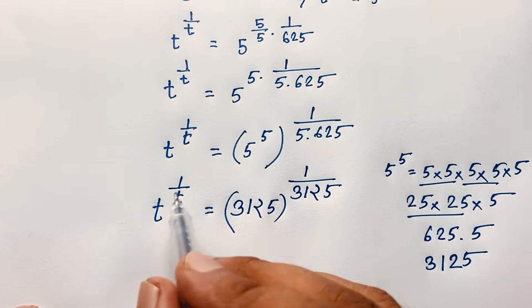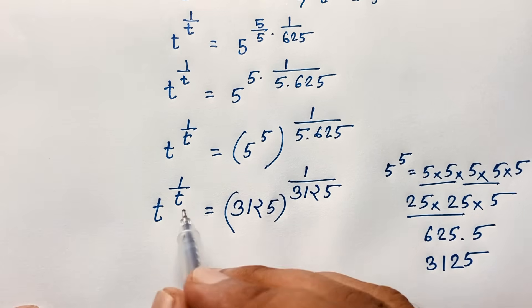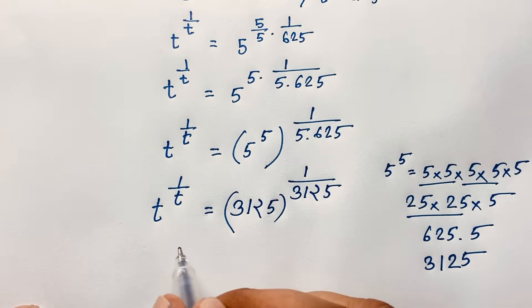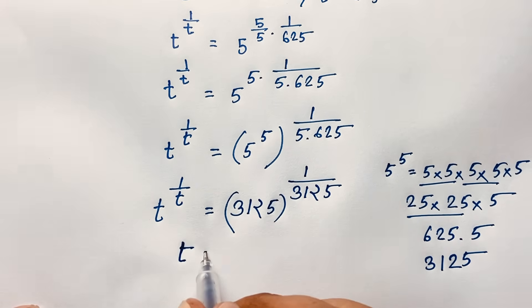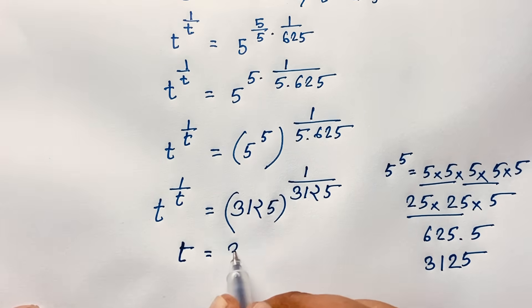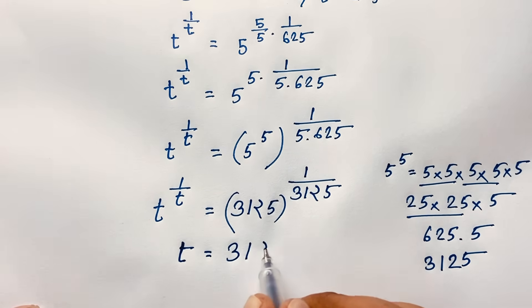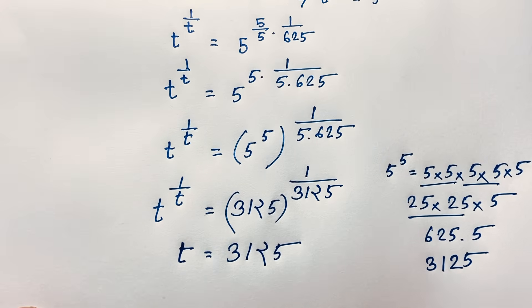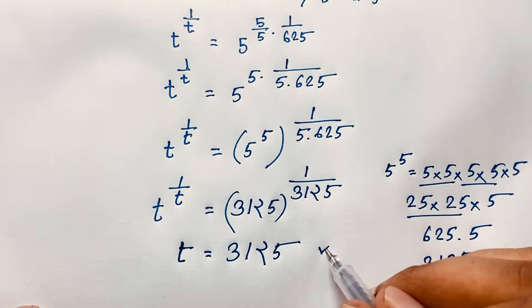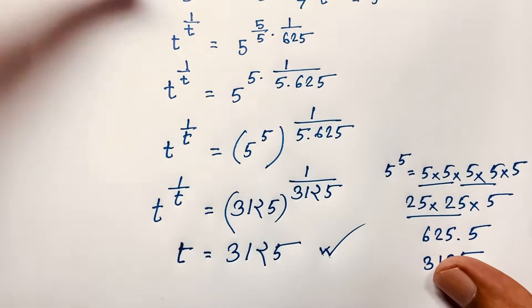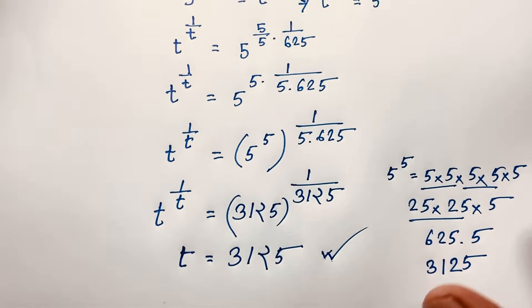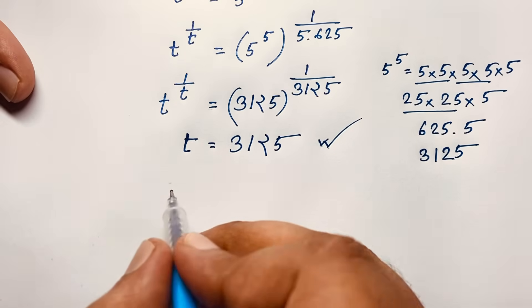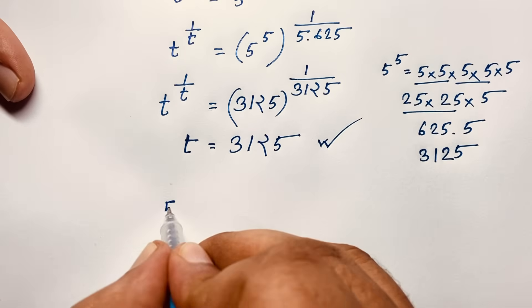Comparing both sides — t to the power 1 over t equals 3125 to the power 1 over 3125 — we can see that t is equal to 3125. This is our final answer to this exponential math problem.